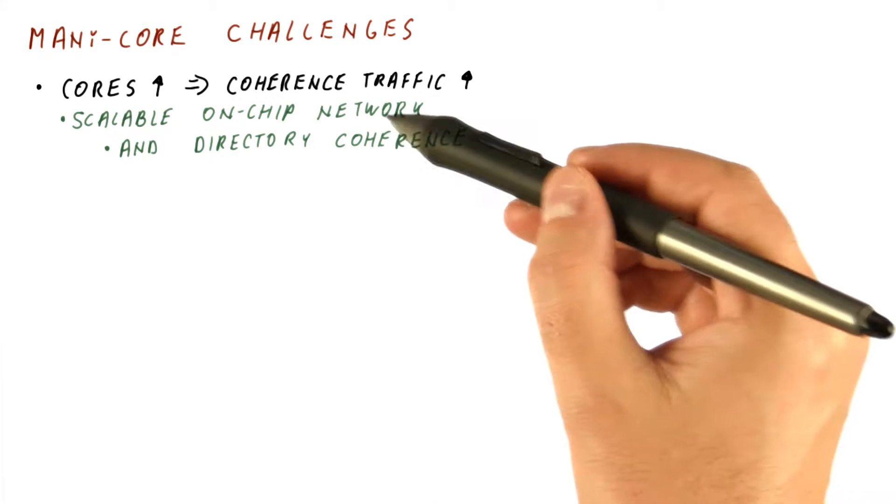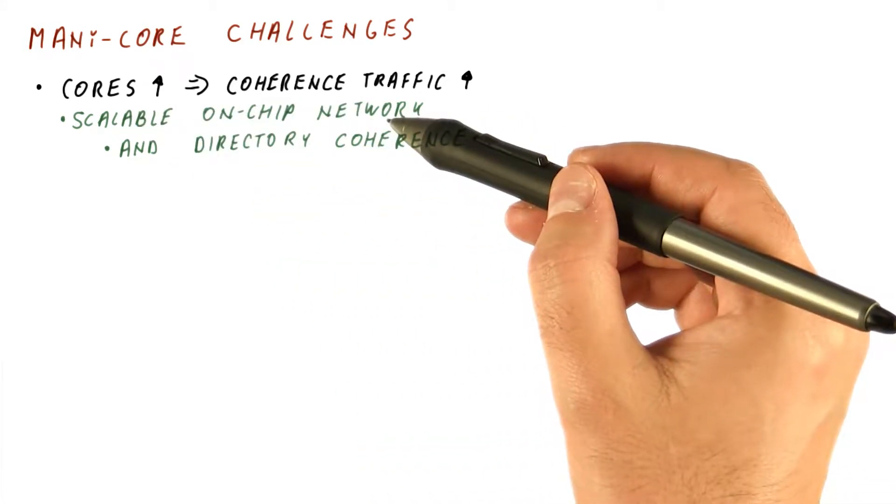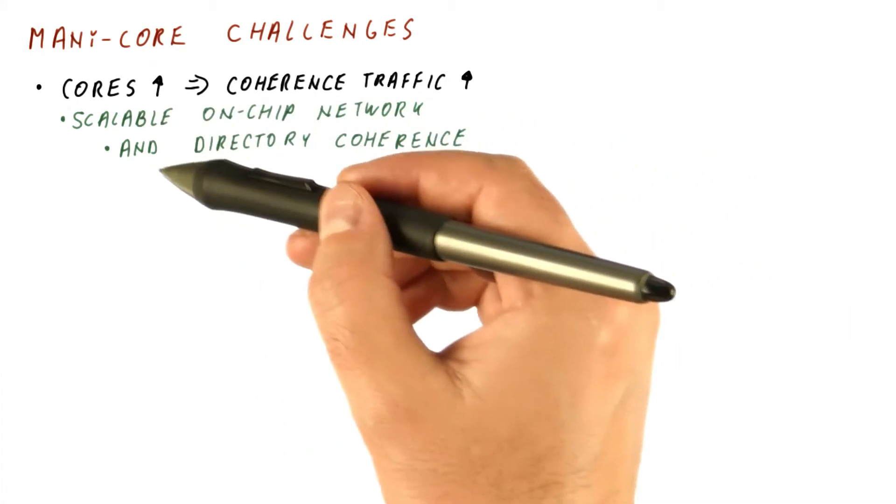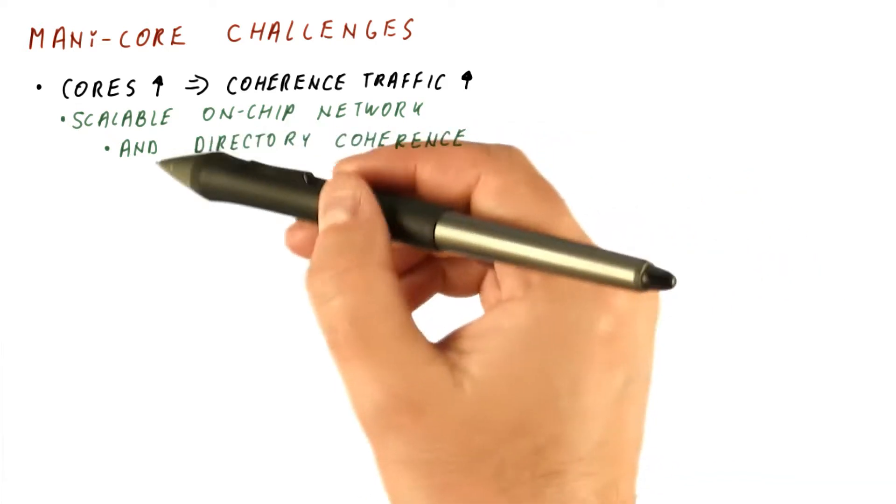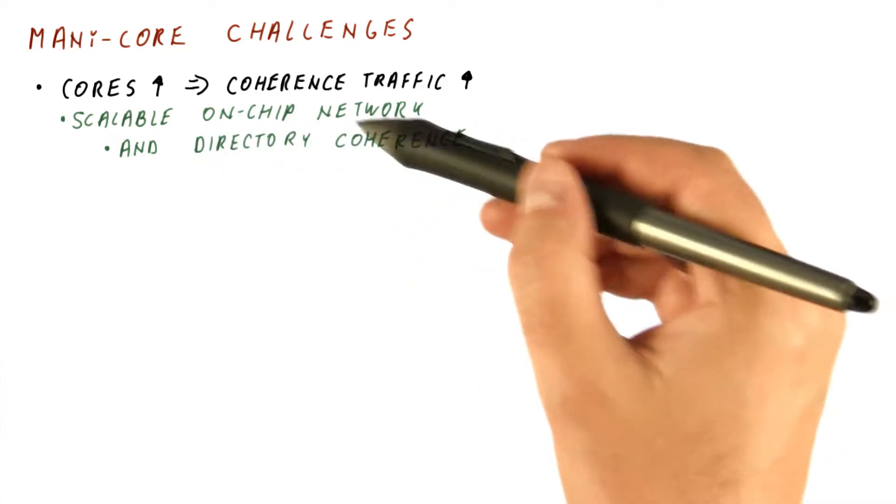And for that, we needed a scalable on-chip network, such as a mesh, and the directory coherence, which we have already seen in our cache coherence lesson.